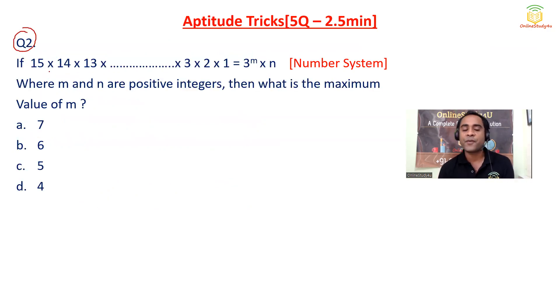Question number two: If 15 × 14 × 13 × 3 × 2 × 1 equals 3^m × n, where m and n are positive integers, what is the maximum value of m? So basically, we have to find out 3 to the power something. So we have 3 here, 3 × 5, and then here we will be having 12, so 3 × 4, and then we will be having 9, 3 × 3, and then we will be having 6, so 3 × 2, and 3 is here. How many 3s we have? 1, 2, 3, 4, 5, 6. That means 3 to the power 6. So the value of m will become 6. Option B will become the correct answer.